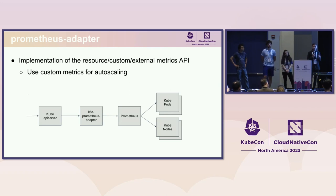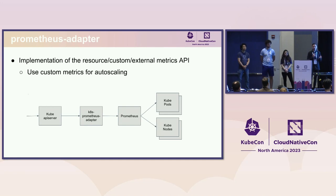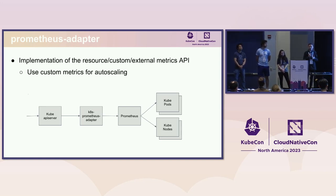If you want to do more than that, you can use another project we own: Prometheus adapter, which implements three APIs — not just the resource metrics API, but also the custom and external metrics APIs. Those allow autoscaling based on any kind of metric. For example, if you want to autoscale your application based on the rate of requests it is receiving, you can use Prometheus adapter. It queries Prometheus and exposes those metrics to the kube API server, making any metric collected in your Prometheus backend available for autoscaling.